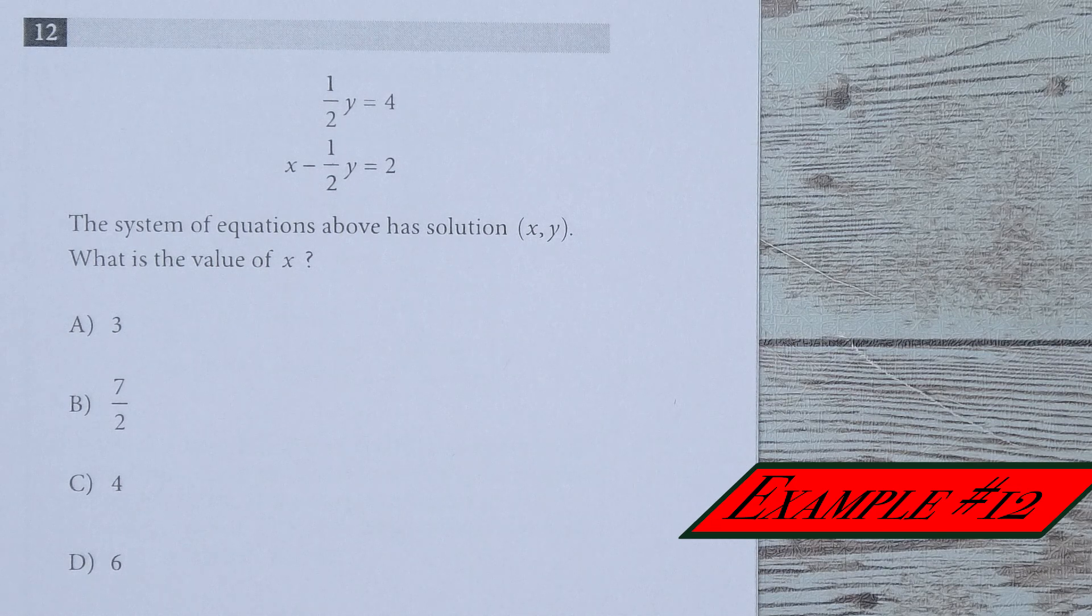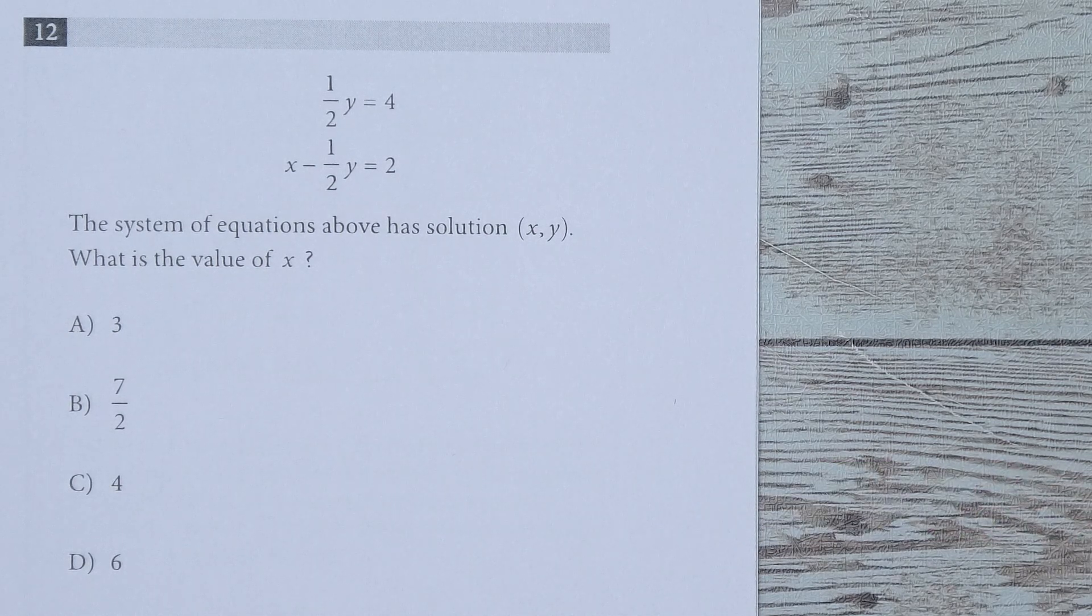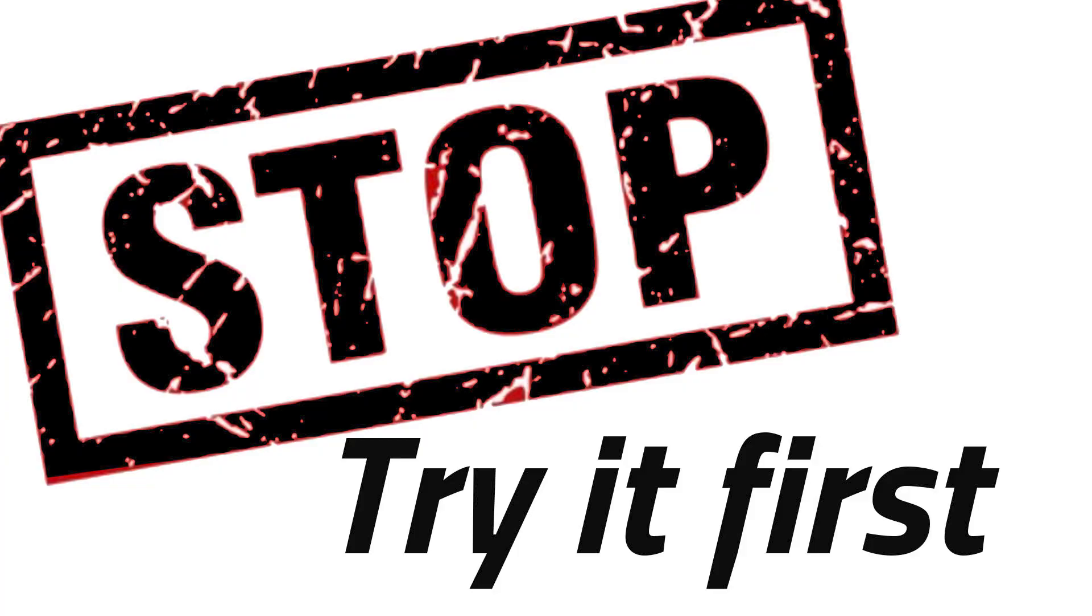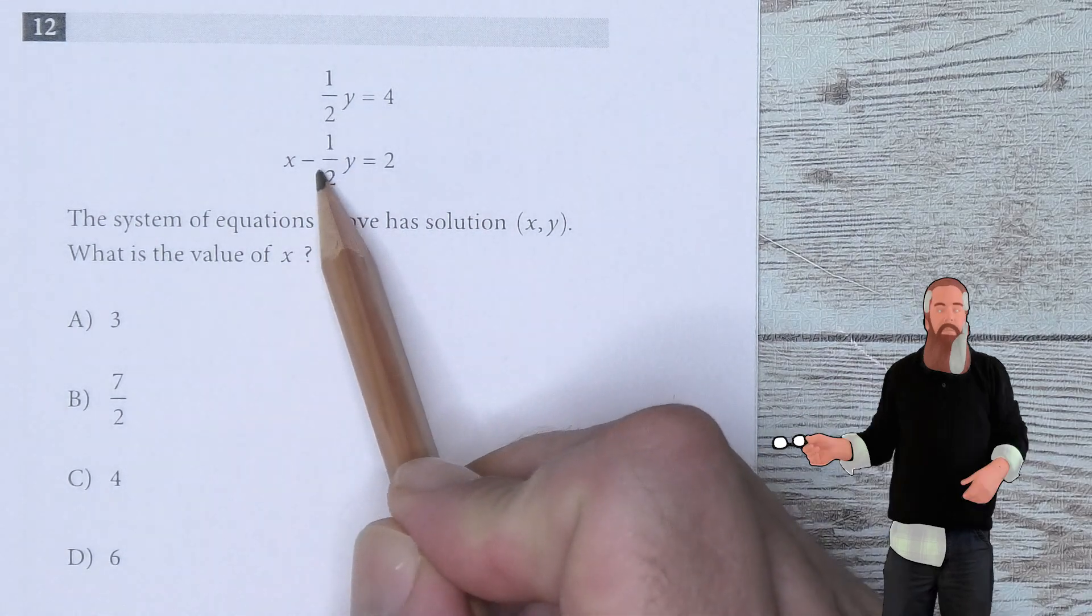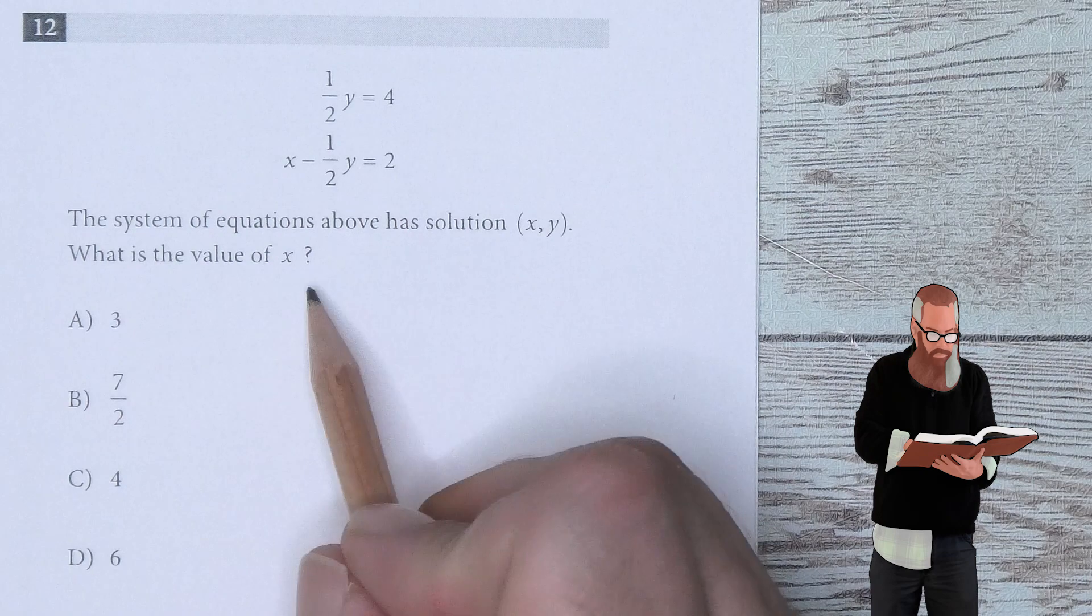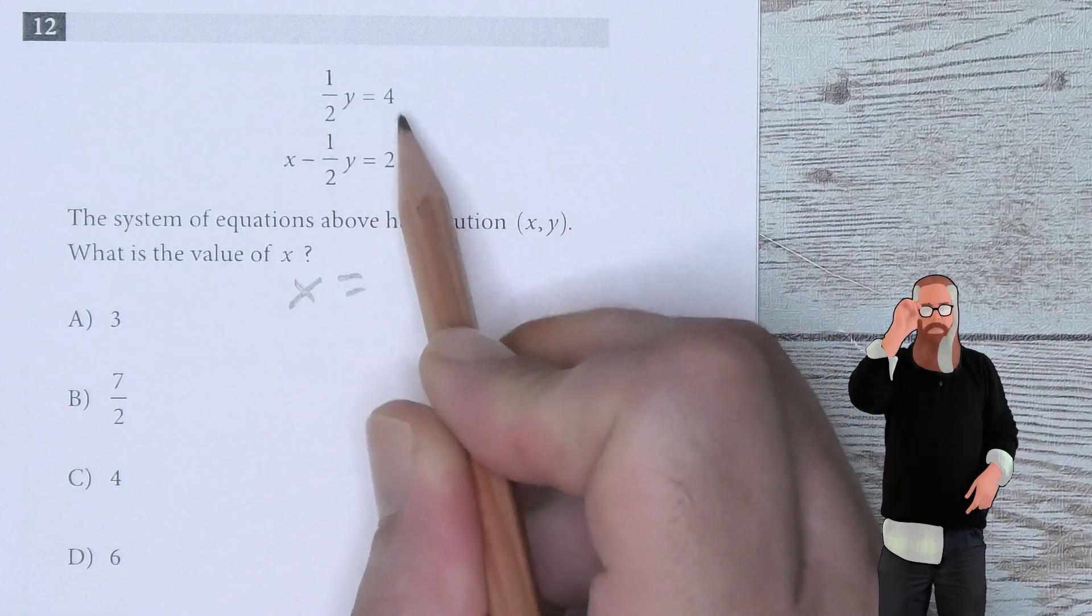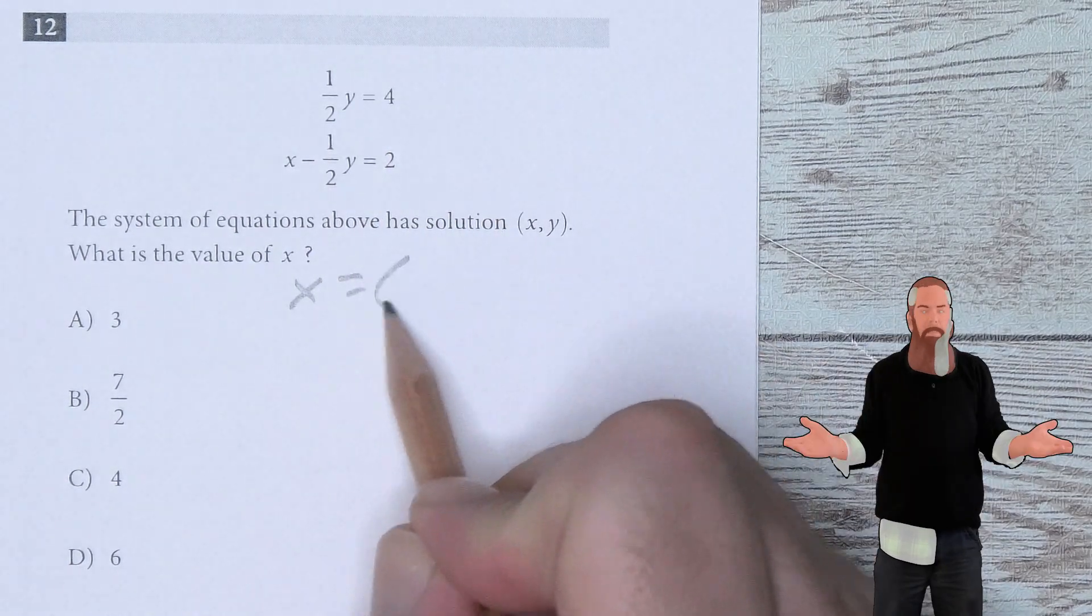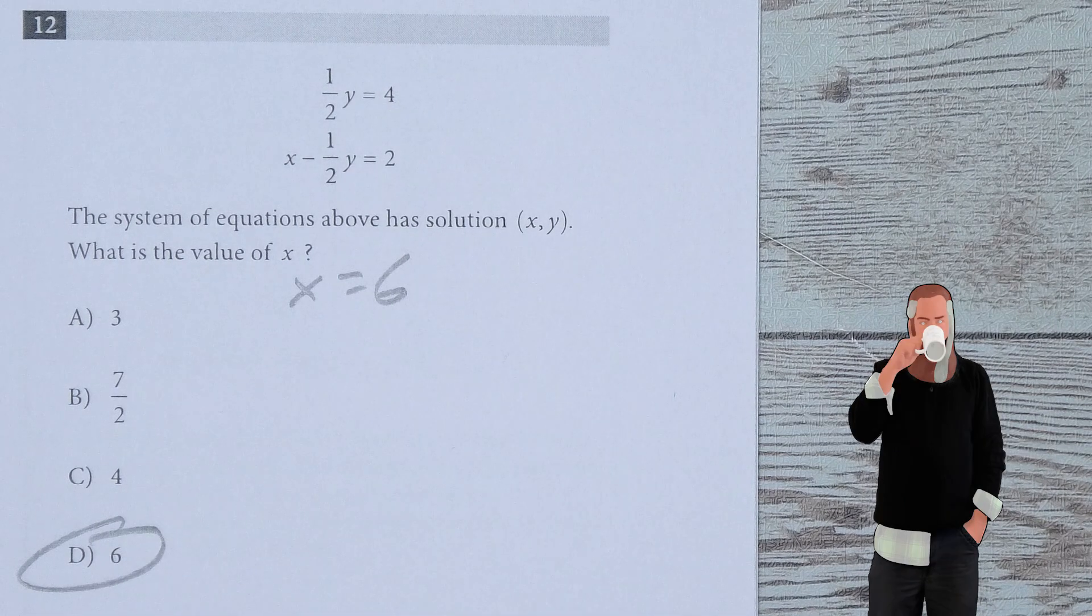The system of equations above has solution (X,Y). What is the value of X? Let's add both equations together because I have 1/2X minus 1/2X. This gives me X equals 4 plus 2, which is 6, so 6 is the answer.